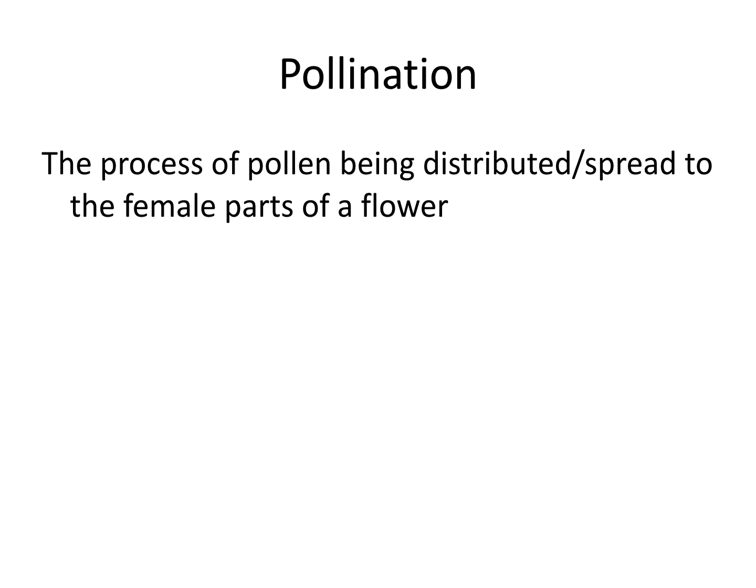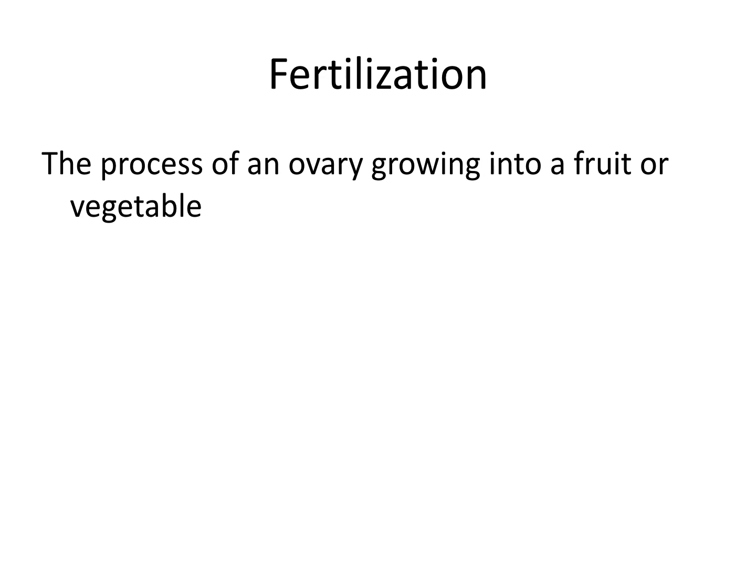There is another process we learned about. If you see the word '-ation,' that means it's a process. The next one is fertilization, and that's the process of an ovary growing into a fruit or vegetable. So we have pollination and we have fertilization. The male's general purpose is pollination; the female's general purpose is fertilization. But you need the male and the female for both of those processes.